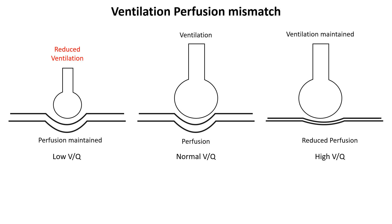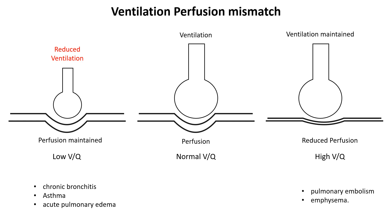A high V/Q mismatch occurs in conditions like chronic bronchitis, asthma, and acute pulmonary edema due to the destruction of alveoli or the accumulation of fluid within them. In contrast, a low V/Q mismatch is observed in pulmonary embolism and emphysema, where reduced pulmonary blood flow and hyperinflated alveoli with increased airflow, respectively, are the underlying causes.